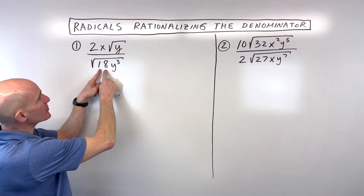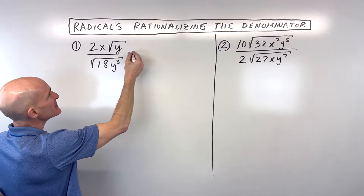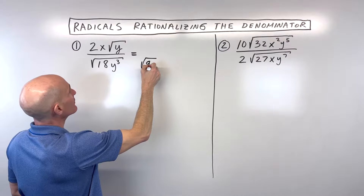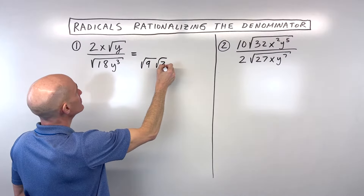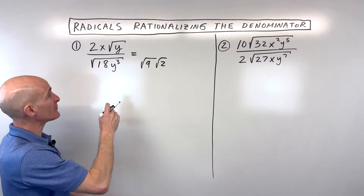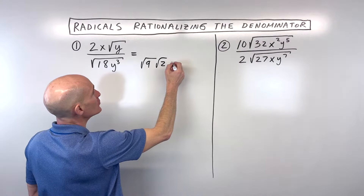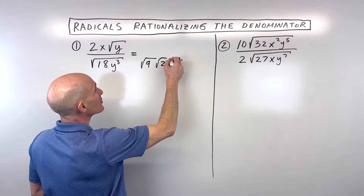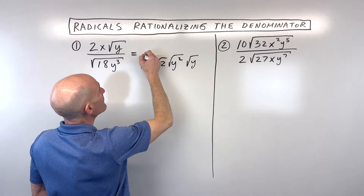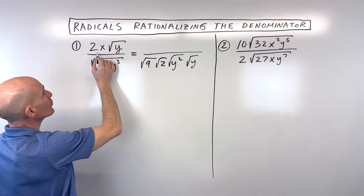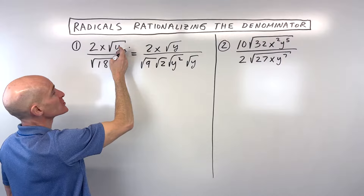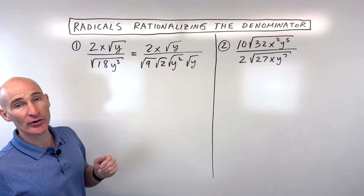The first thing I notice is that the square root of 18 is really like the square root of 9 times the square root of 2, which equals 18. The reason I did this is because 9 is a perfect square, so we can simplify that. Same thing with y cubed — that's really going to be the square root of y squared times the square root of y. And in the numerator, we've got 2x times the square root of y. There aren't any perfect squares we can pull out of that radical.